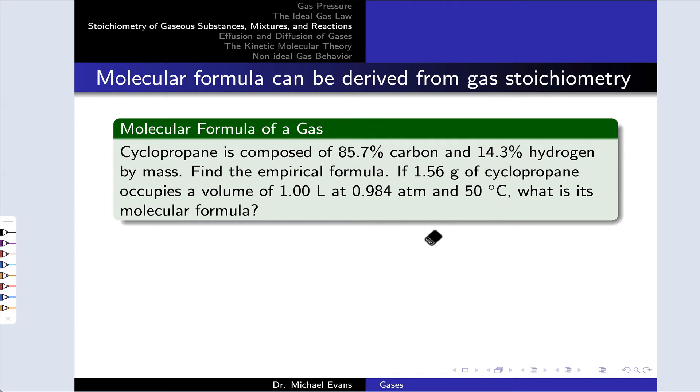Here we're asked to determine the molecular formula of cyclopropane, which is a gas. We're first given mass percentage information that suggests a way forward is to first determine the empirical formula of this compound. We're going to find that first, and then we're going to deduce the molecular formula from this information, which is ideal gas law-related information that allows us to infer the number of moles we're dealing with.